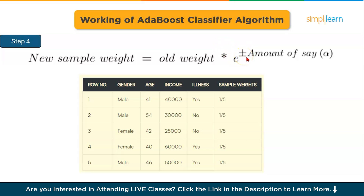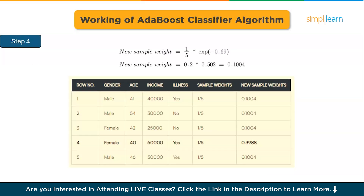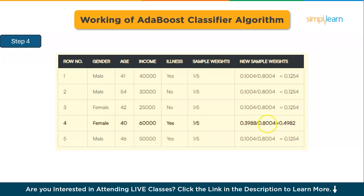There are four correctly categorized samples and one incorrectly classified sample. The sample weight of each data point is 1/5 and the amount of say for the gender stump is 0.69. The adjusted weight for the incorrectly categorized point is 0.3980. The total sum of updated weights adds up to 0.8004, so to normalize them we divide each weight by 0.8004, making the total sum equal to 1. After normalization, the dataset weights now sum to 1.